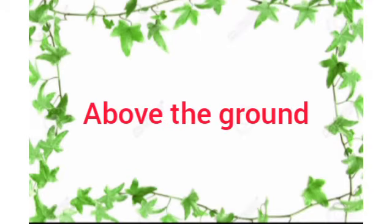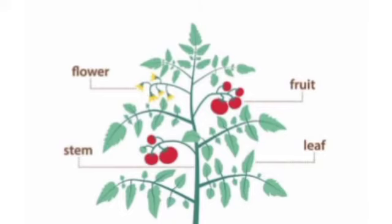What is the shoot system? The parts of a plant that grow above the ground. What are those parts? Stem, leaves, flowers, fruits, buds, seeds and so on.